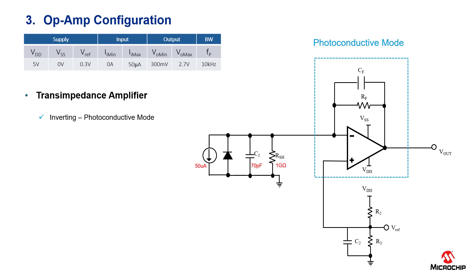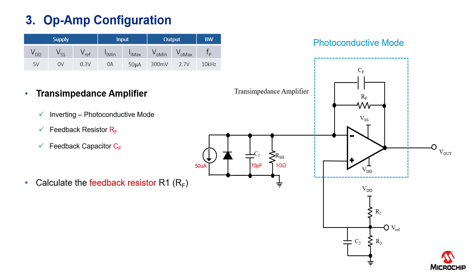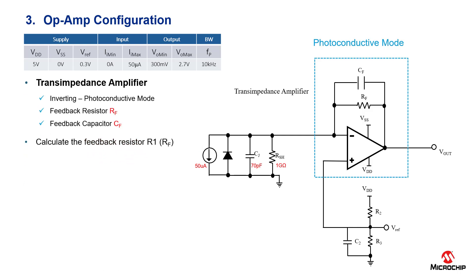For step three, we have to configure a transimpedance amplifier by calculating the values of the feedback resistor and the feedback capacitor. To calculate the feedback resistor, we divide the output voltage values by the maximum input current from the photodiode. RF is calculated to be 48 kilo-ohms.